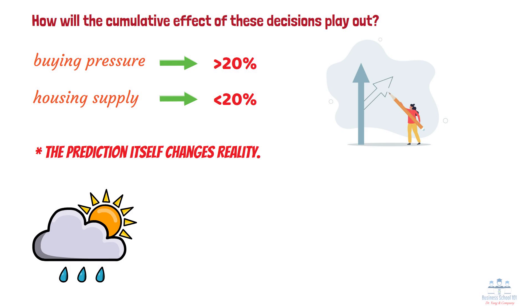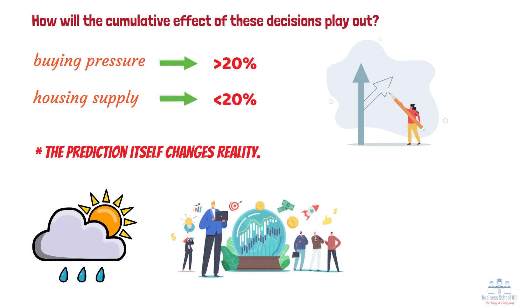However, once an economic prediction is published, all economic participants will adjust their behavior based on this prediction, ultimately changing the economic outcome.